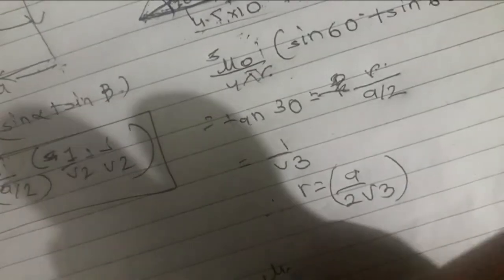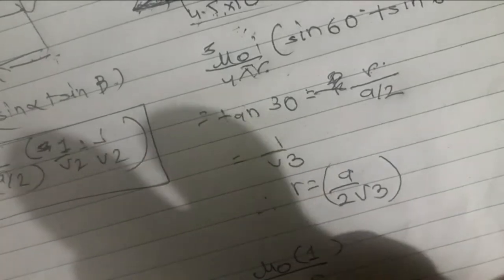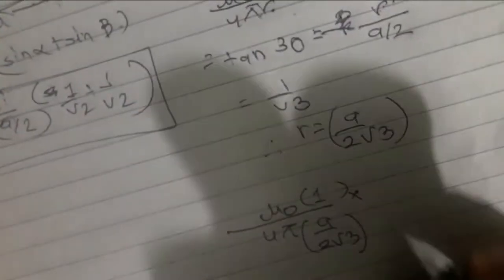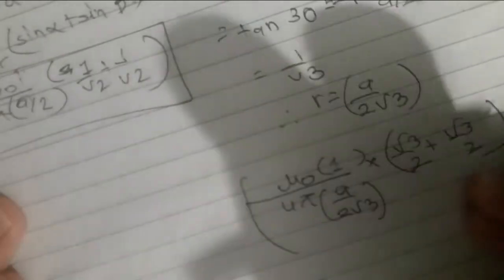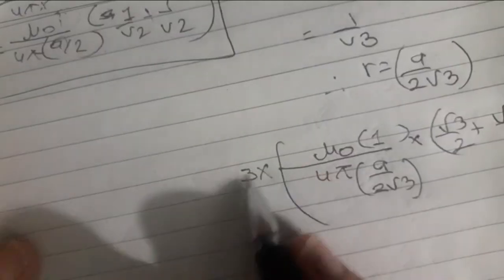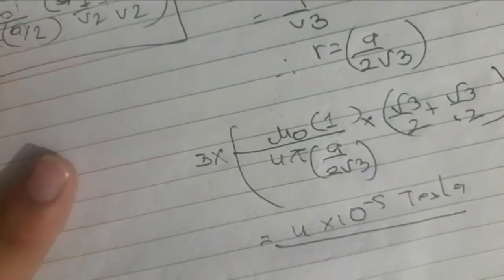Now we have the formula. We have i = 1 ampere, r = a/(2√3), and sin60 + sin60 = √3/2 + √3/2. Substituting a = 4.5 × 10⁻² meters and multiplying by 3 for all three sides, the final answer is 4 × 10⁻⁵ Tesla. This is the magnetic field at the centroid of the triangle.